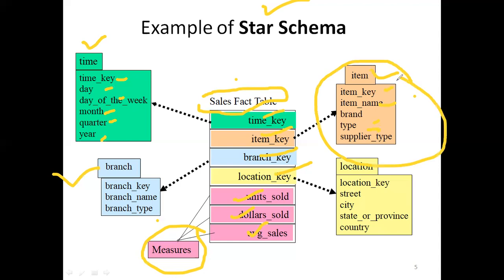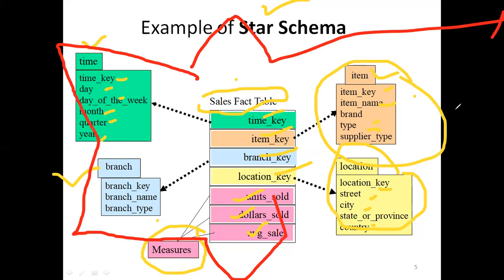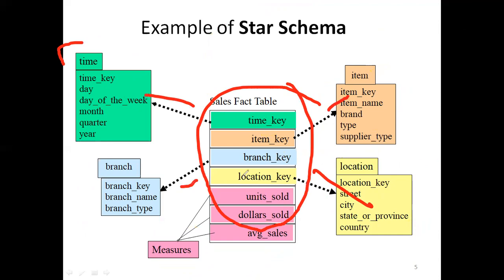The location table has attributes like location key, street, city, state, and country. Now look at this schema diagram carefully — it takes the form of a star because the sales fact table is in the middle and all the dimension tables are connected around it. Because it takes the shape of a star, we call this type of schema a star schema.